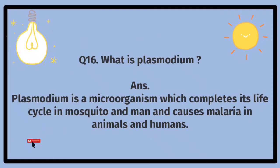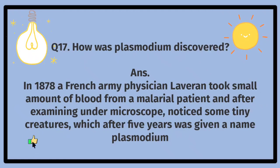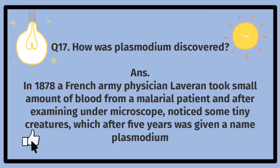What is Plasmodium? Plasmodium is a microorganism which completes its life cycle in mosquito and man and causes malaria in animals and humans. Plasmodium kiya hai. Plasmodium ek microorganism hai jo machar aur insaan mein apni zindagi ka daur mukammal karta hai aur janwaron aur insaanon mein malaria ka sabab banta hai. How was Plasmodium discovered? In 1878, a French army physician Laverin took a small amount of blood from a malarial patient and after examining it under a microscope, noticed some tiny creatures, which after five years was given the name Plasmodium.